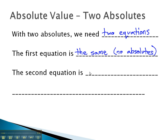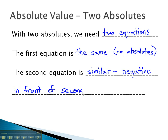The second equation is similar. We will put a negative in front of the second expression, and we will put that second expression in parentheses. This considers the option where both absolutes simplify to opposite numbers.